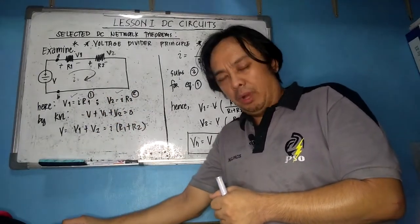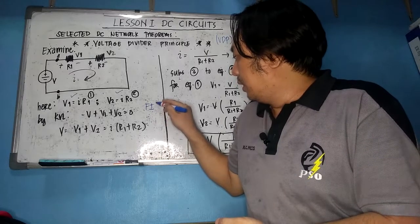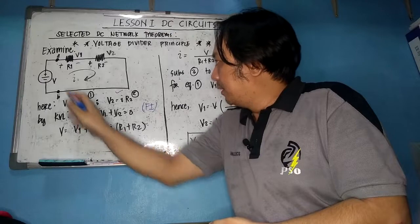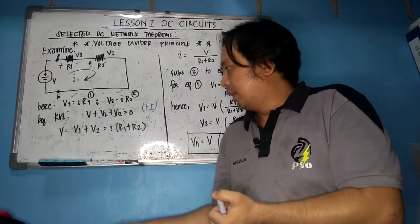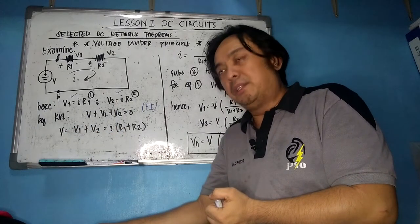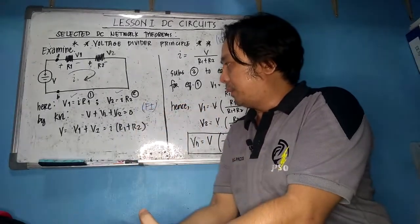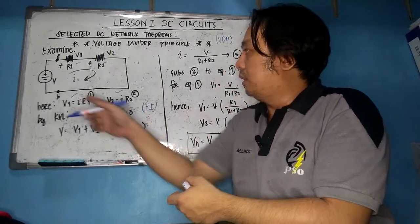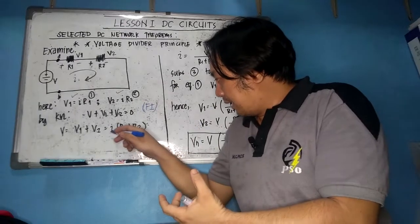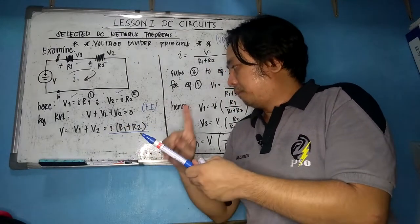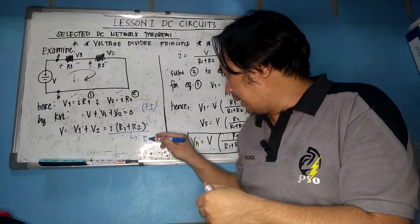Using Kirchhoff's Voltage Law, going around the loop: −V + V1 + V2 = 0. Rearranging, the total voltage is simply V1 + V2. You can rewrite that, and you can see that R1 + R2 is the total resistance, which I call R_EQ.